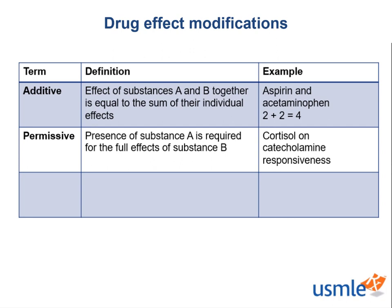Cortisol comes from the adrenal gland — specifically the zona fasciculata of the adrenal cortex. Cortisol increases blood pressure by upregulating alpha-1 receptors on arterioles. When it does this, it increases sensitivity to norepinephrine and epinephrine, our catecholamines. So while epinephrine and norepinephrine have effects on their own, when cortisol is around, it permits way more responsiveness.